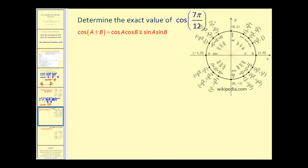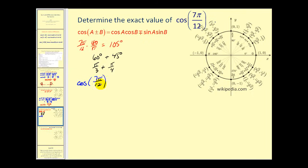Here's another one — same idea but now in radians. It can be difficult to determine which reference angles to add or subtract in radians, so let's convert to degrees first: 7π/12 equals 105 degrees. This tells us we can use a 60-degree angle plus a 45-degree angle. In radians, 60 degrees is π/3 and 45 degrees is π/4. So cosine of 7π/12 equals the cosine of π/3 plus π/4, and these are the angles we'll use in our identity.